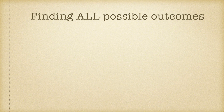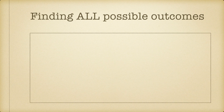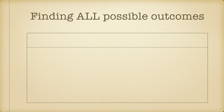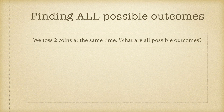Let's combine some simple events together and find out all possible outcomes for those events. Let's take a look at some examples. We'll start by tossing two coins at the same time — what are all possible outcomes that can happen?